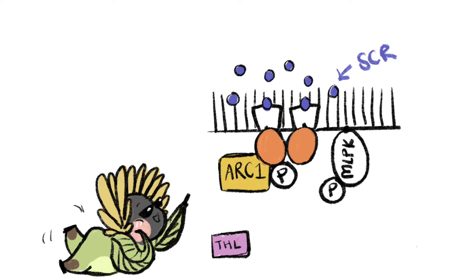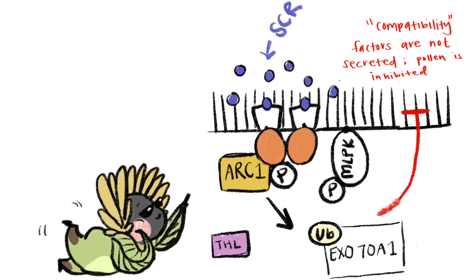Another protein called the M-locus protein kinase, also known as MLPK, and another ubiquitin ligase called ARC1 becomes phosphorylated. And lastly, ARC1 ubiquitinates and degrades a component of the exocyst called EXO70A1. Compatibility factors are now no longer secreted, and pollen is inhibited. It is so important that the activity of the SRK receptor is tightly regulated and only activated when in contact with the self-pollen, or else the plant will stay sterile.